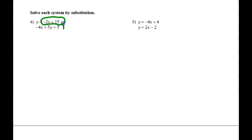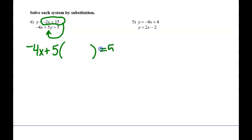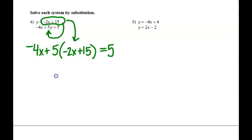What would it be easy to substitute here? It already says y equals negative 2x plus 15. So we're going to take what it's already solved for — the y — and substitute it into the other equation. So we will have negative 4x plus 5 times y equals 5, but instead of y we're going to write negative 2x plus 15, and then solve.